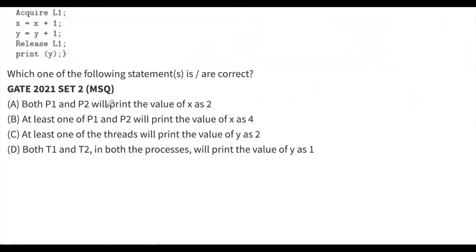Option A says both P1 and P2 will print x as 2 - correct, both processes print x as 2. Option B says at least one of P1 and P2 prints x as 4 - no, both print x as 2 only, so option B is wrong. Option C says at least one thread prints y as 2 - no, both threads print y as 1 for both P1 and P2, so option C is wrong. Option D says both T1 and T2 in both processes print y as 1 - yes, that's correct. So options A and D are the right answers.